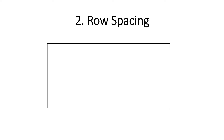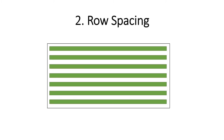Next, you will have to take into account your row spacing. You should know your row spacing, but if you don't, it's quite easy to measure. Let's assume this is my field and these are my cane rows. My row spacing will be the distance from the center of one cane row to the center of the next. In this example, my row spacing is 1.2 meters.